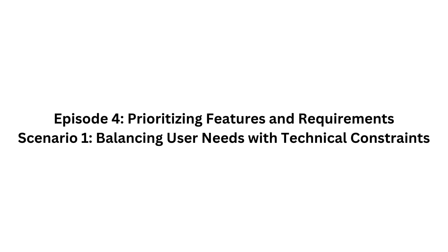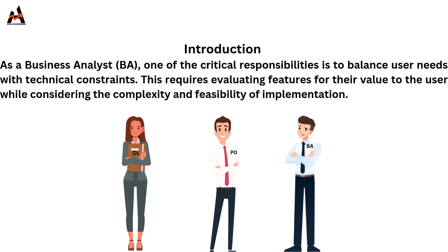Episode 4: Prioritizing Features and Requirements — Scenario 1. Balancing User Needs with Technical Constraints. Introduction.